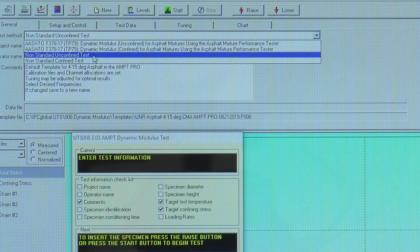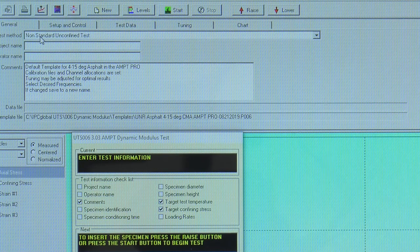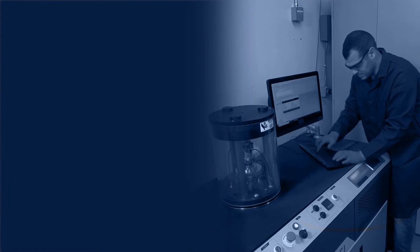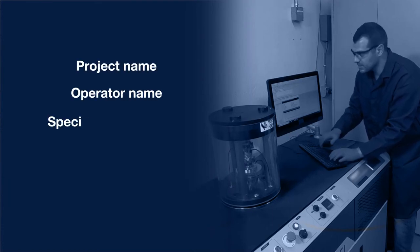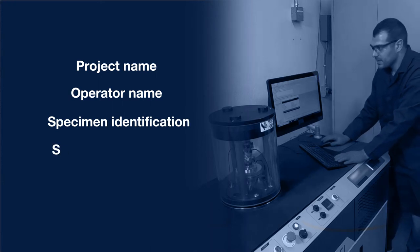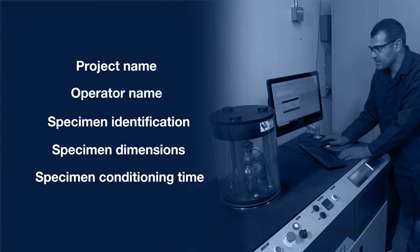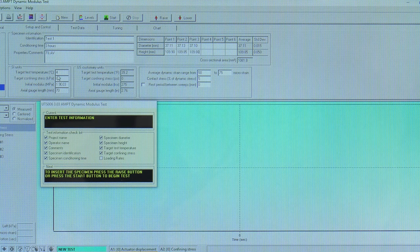Select the appropriate test template. Enter the specimen identification and control information into the dynamic modulus test template. The information may include project name, operator name, specimen identification, specimen dimension, specimen conditioning time, and comments like air voids. Check the target test temperature and initial modulus on the test control software.